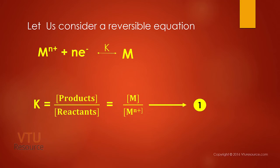Let us consider a reversible equation: M(n+) plus N electrons giving rise to M. Since it is a reversible equation, there exists an equilibrium constant K. K equals concentration of products by concentration of reactants. When you apply this to the above equation, K equals concentration of M by concentration of M(n+).